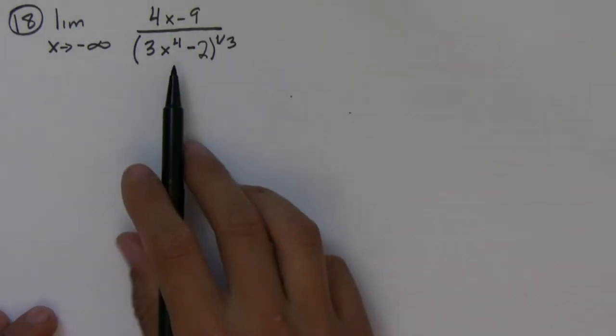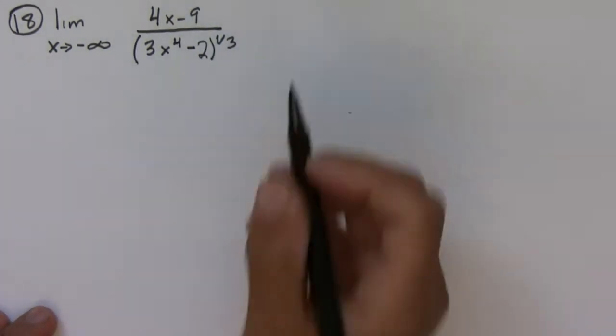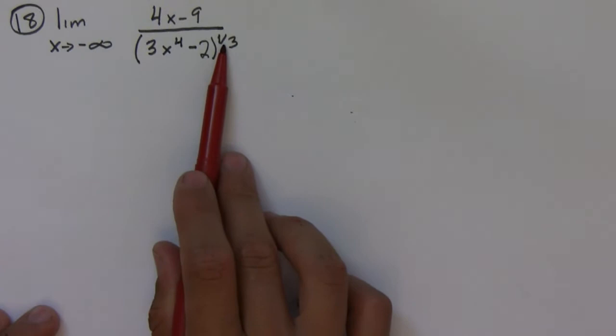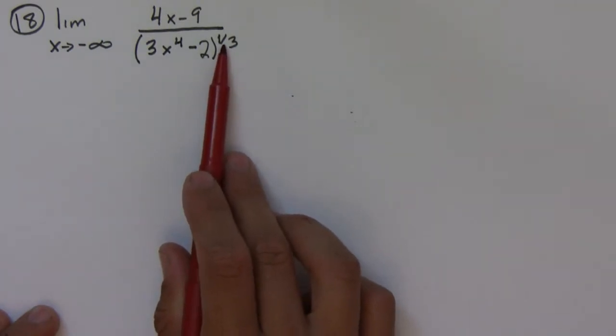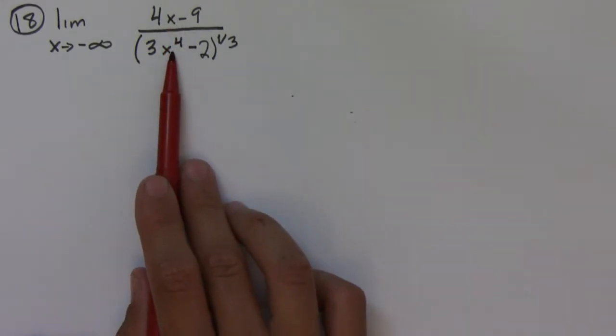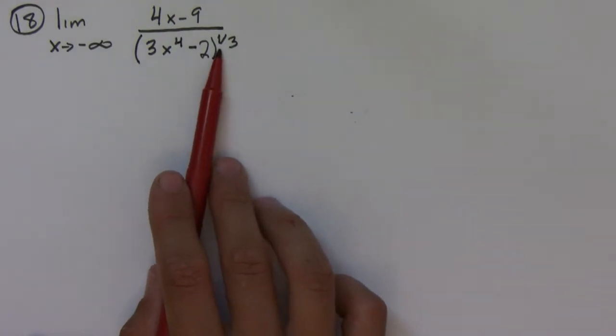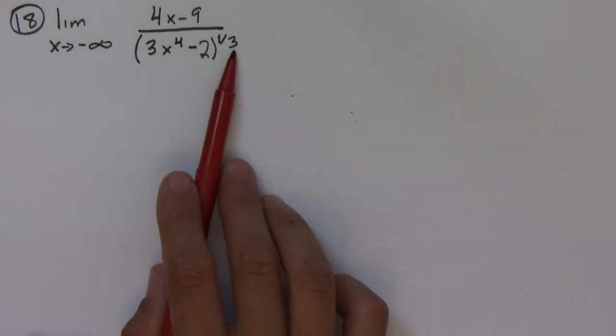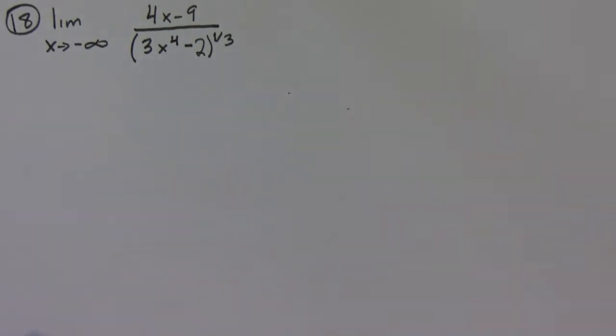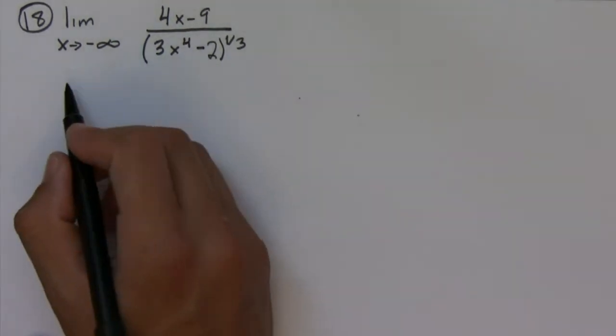Okay, so this problem looks difficult but it won't turn out that bad. First, we're being raised to the one-third, or in other words the cube root. In the numerator we have a power of one, and in the denominator you look at it as four times one-third, or four divided by three. So the highest power is four-thirds, and that's what we're going to divide the numerator and the denominator by.